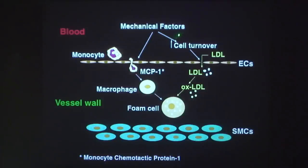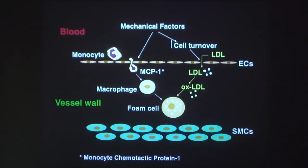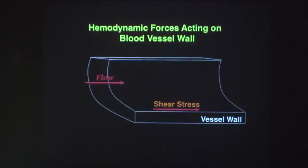Mechanical factors such as pressure and flow can affect endothelial cells in multiple ways. One is to increase cell turnover — cells divide and die, and the intercellular junctions become leaky, so LDL can penetrate the endothelium and become oxidized. Mechanical factors can also cause monocytes to enter the wall due to chemokines such as monocyte chemotactic protein 1 (MCP-1). Once inside, they transform into macrophages that engulf oxidized LDL to form foam cells. Foam cells together with smooth muscle cells and connective tissue form the atheroma, occluding the lumen — that is atherosclerosis.